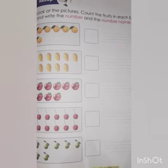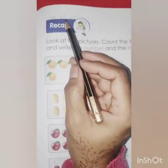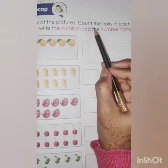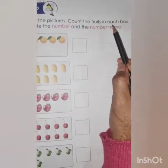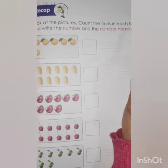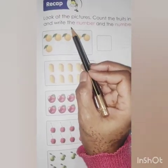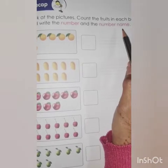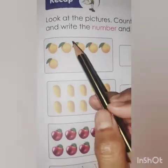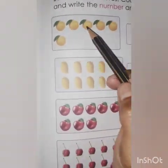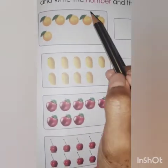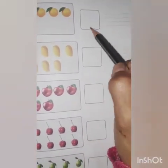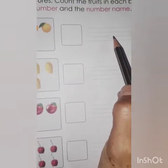Now come to the next page, page number 55. Mention today's date. Recap. Look at the pictures. Count the fruits in each box and write the number and then the number name. First count the fruits, then write down the number, and then the number name.